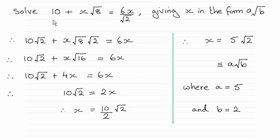We've got to solve the equation 10 + x√8 = 6x/√2, giving x in the form a√b. You can see that the answer is x = 5√2.